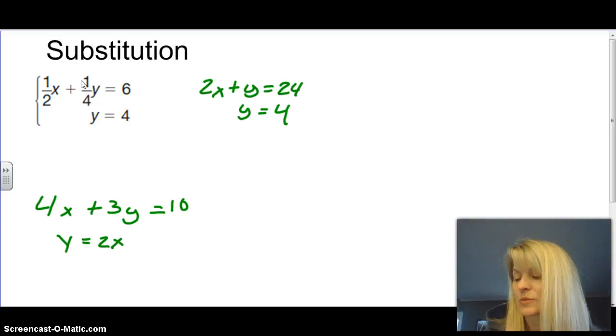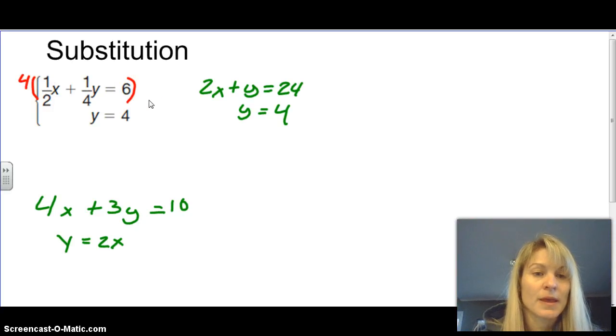So we're going to look at some of these problems that we did last night that we simplified. We went over in class today how to simplify this equation. We had to multiply everything by four. So the two went into four twice, so that became 2x. Four is crossed off, and that became y. And then four times six is 24. And then you just have y equals four.